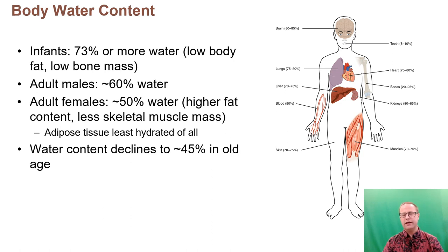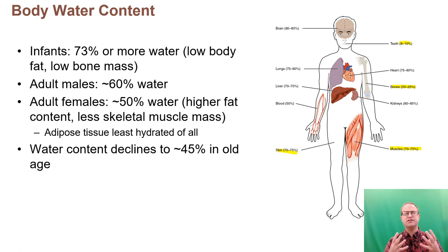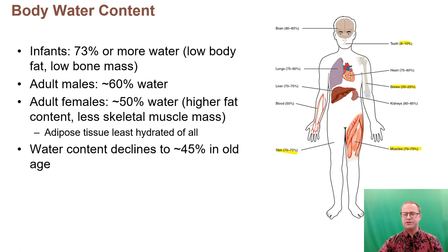The percentage of water in different body structures can vary dramatically. If we look at muscle, you can see it's about 70% water, same as skin. But something like the teeth is 8% to 10%, and bones are 20% to 25%. Regardless of the concentration, water is really important because it's the solvent — the medium in which all the different chemical reactions, respiration, and metabolism are occurring.